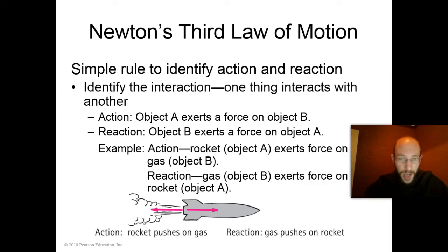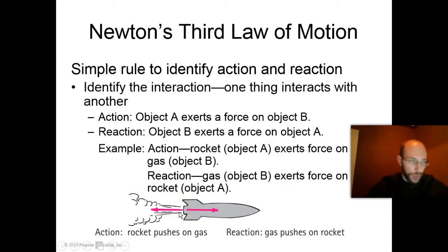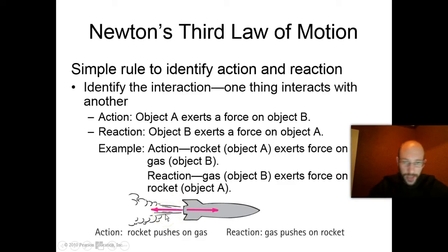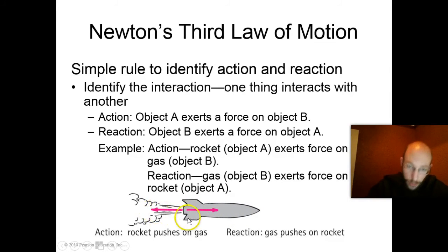Here's another example: how does a rocket fly? Identify the interaction — there is an interaction between the rocket and the gas that fuels it. The rocket exerts a force on the gas, pushing the gas backward, and the gas exerts a force on the rocket, pushing the rocket forward. Notice how the rocket pushes the gas backwards in order to move forwards. That's physics.